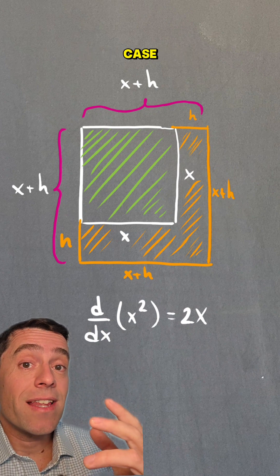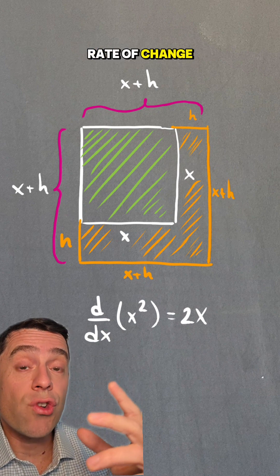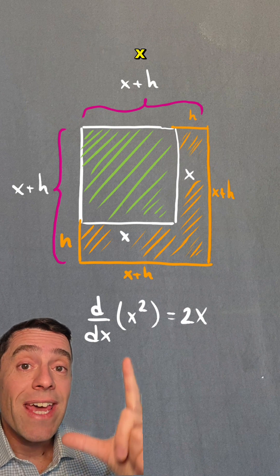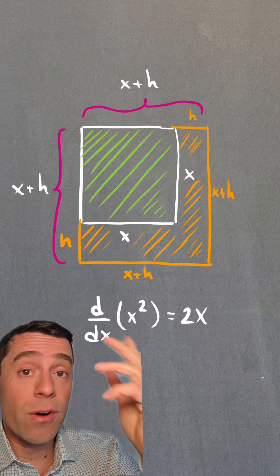So it makes sense in this case that the instantaneous rate of change of the area with respect to x is just 2x in this case and not the entire perimeter.